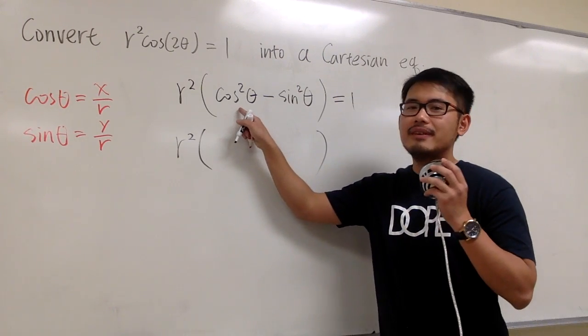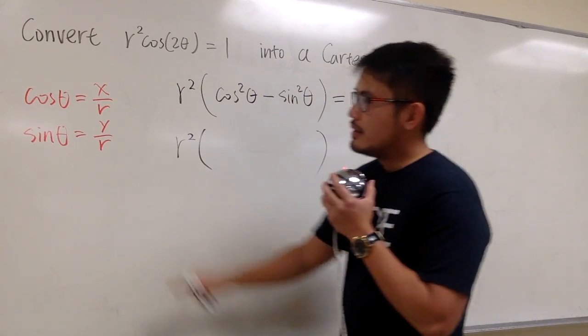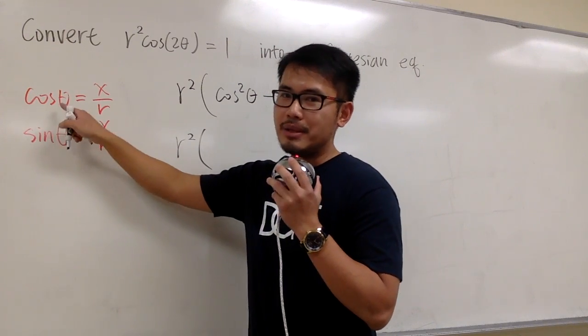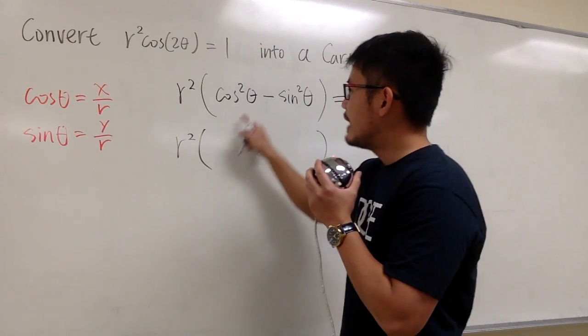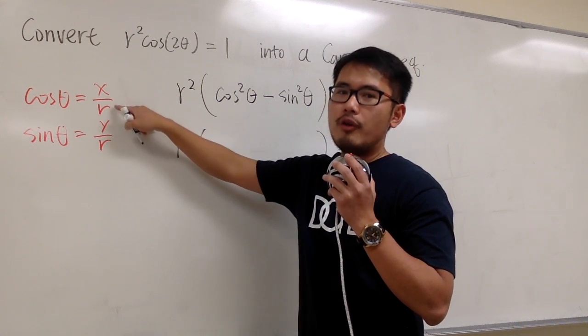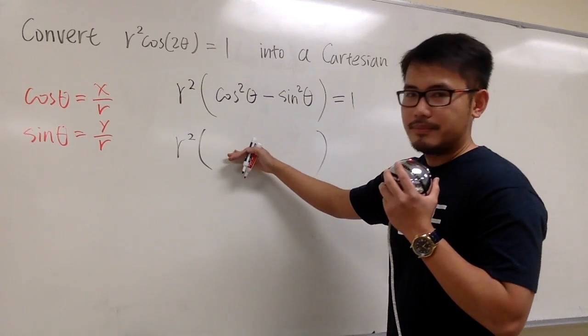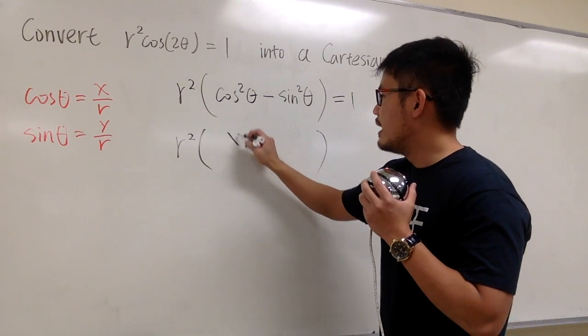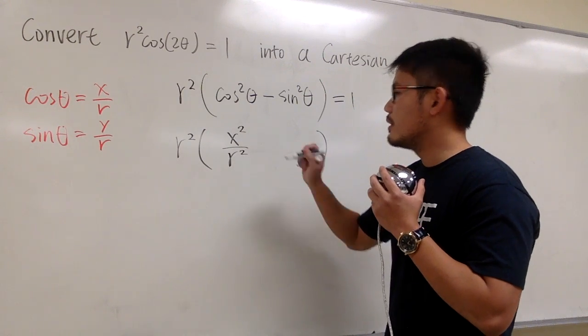Let's keep the r squared on the outside to be the same. Here we have cosine squared theta. This is just cosine theta, so that means I have to square both sides. That means for this, all together, I must put down x squared over r squared right here.